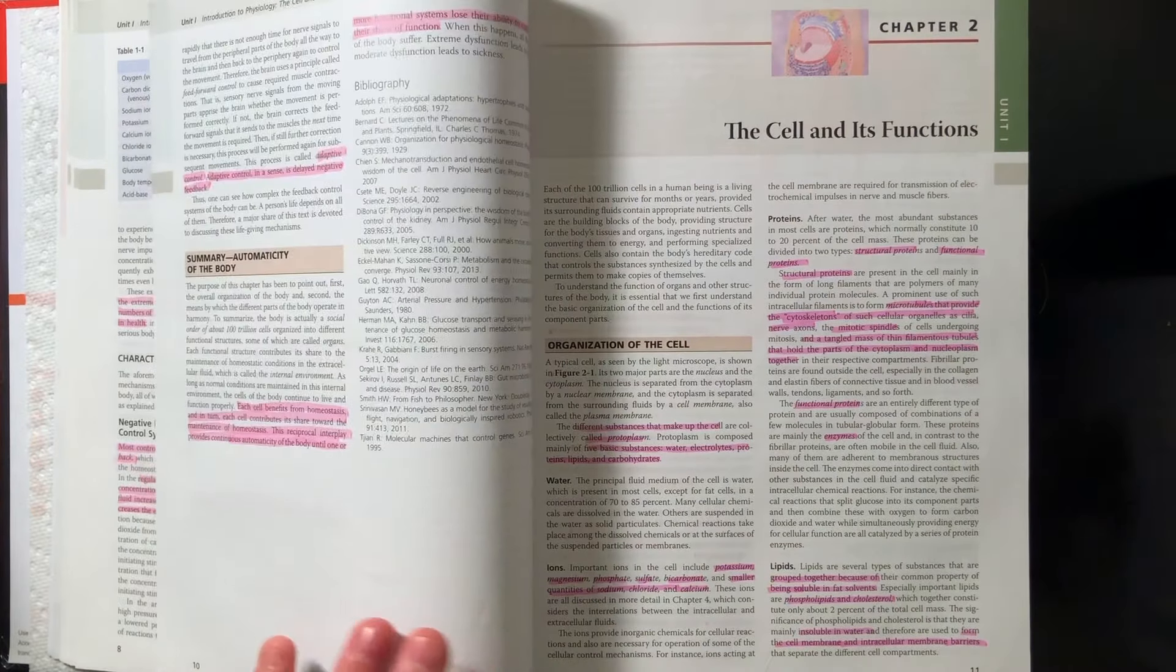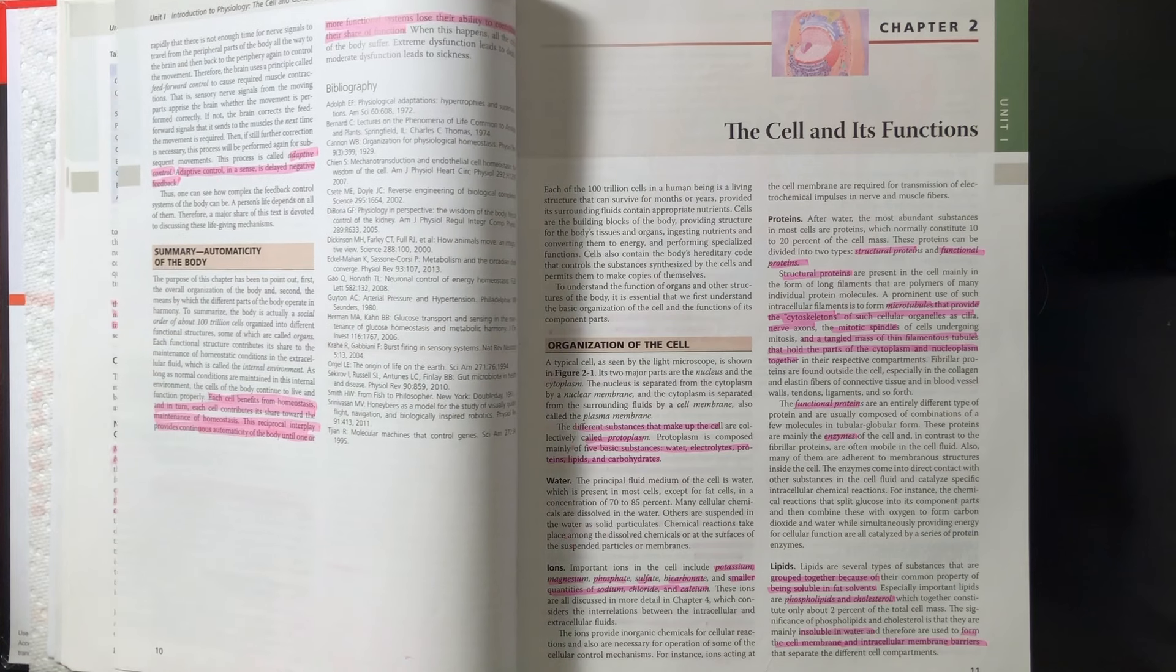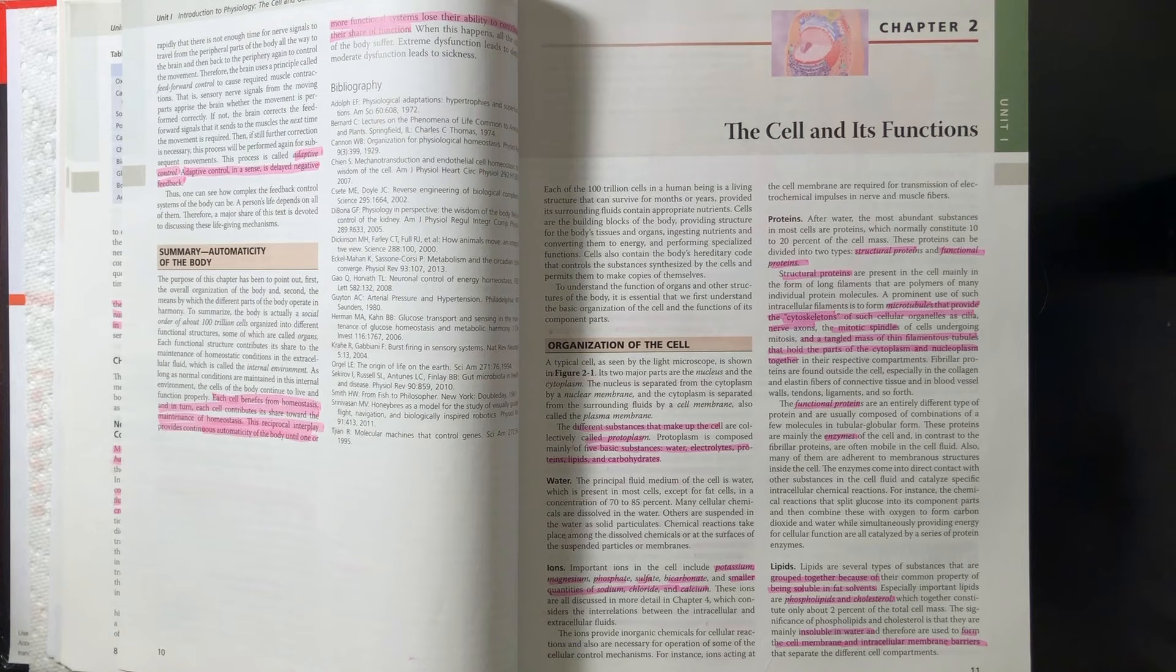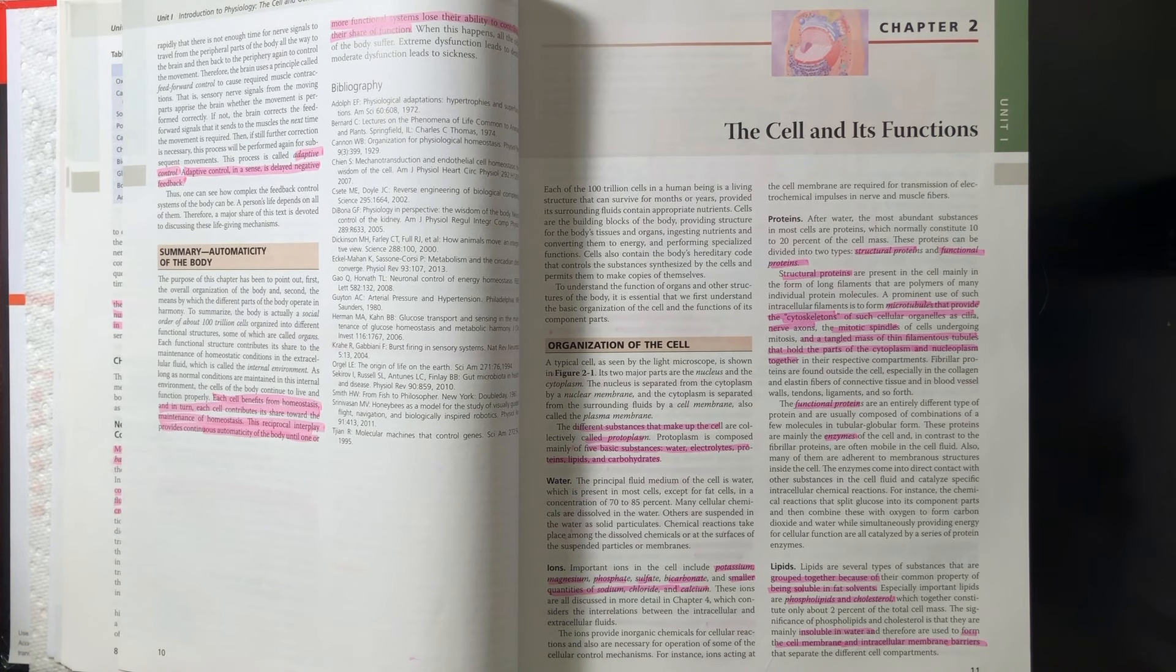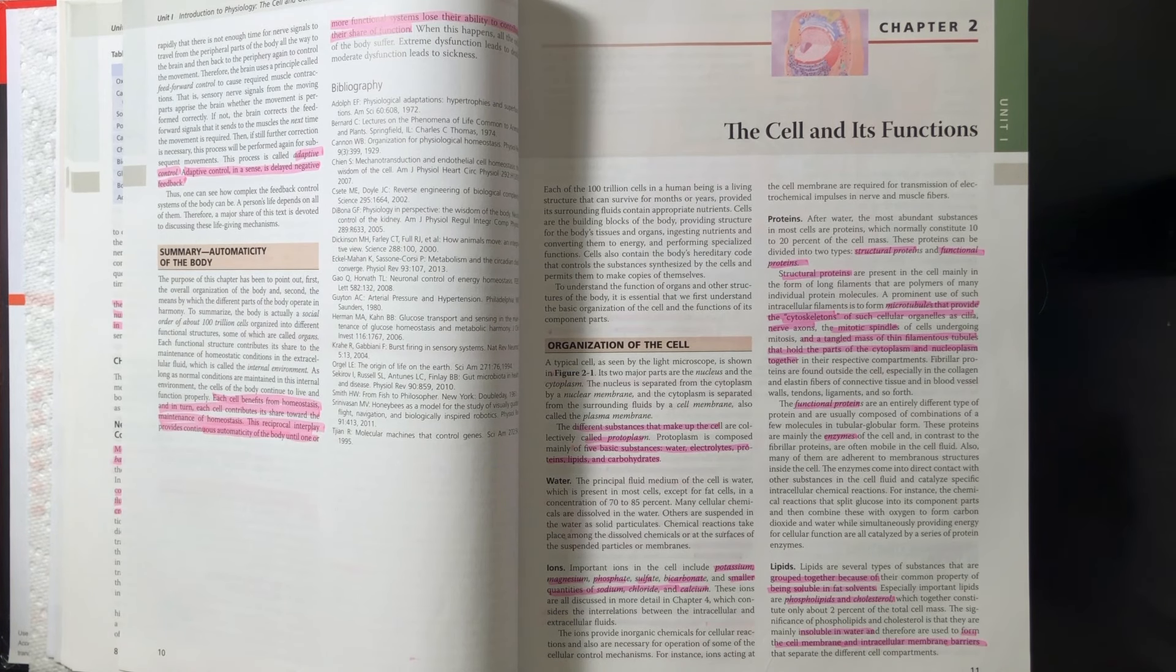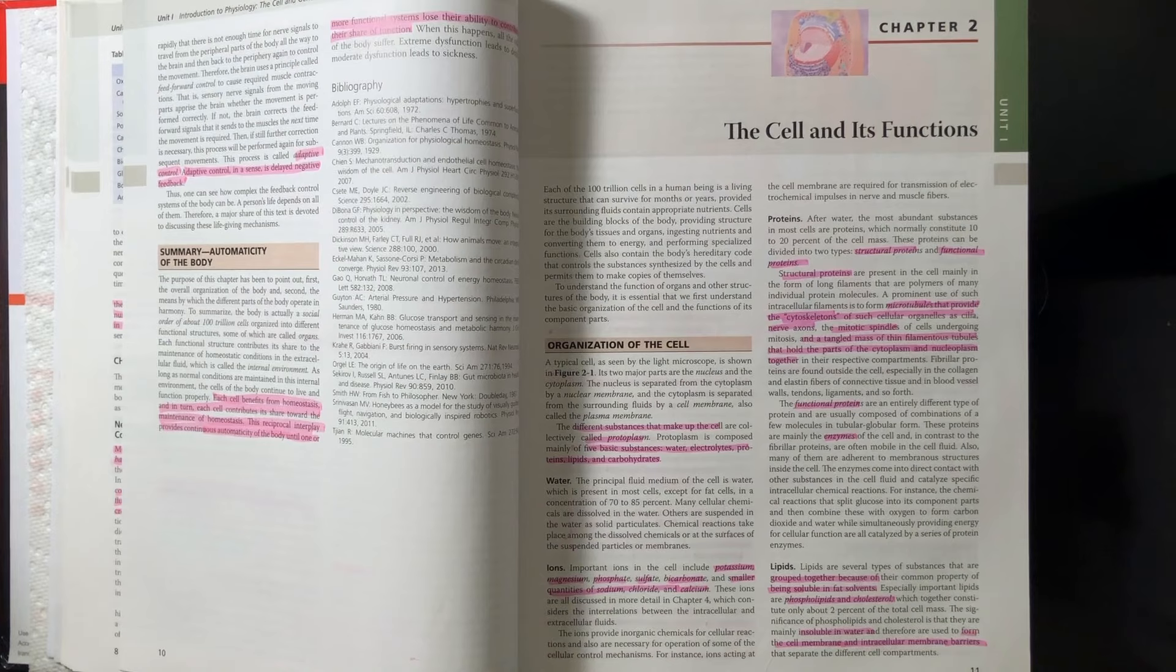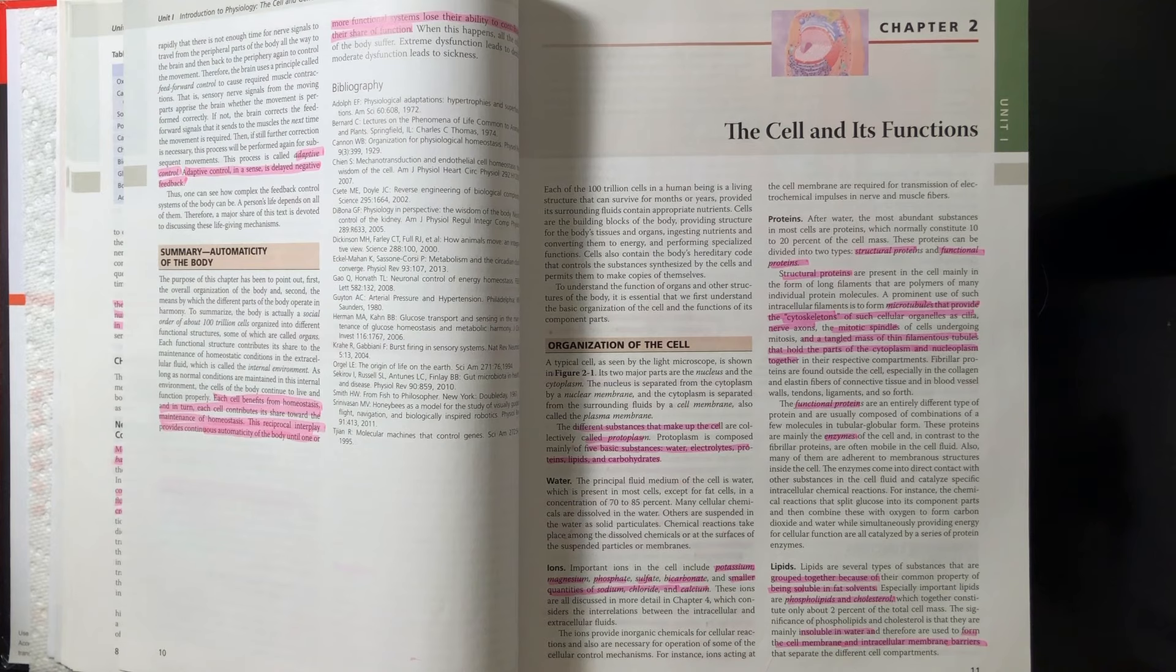And then lastly, they talk about adaptive control here, and give the neurological example here, where say you had an input that required an instantaneous output before you can actually process it. Then your body will go ahead and instantly produce that output, and then process it after the fact. And then during that process, you realize, okay, we did too strong of an output or too weak of an output. Next time, we're going to do it this way. And that's essentially a delayed negative feedback loop.